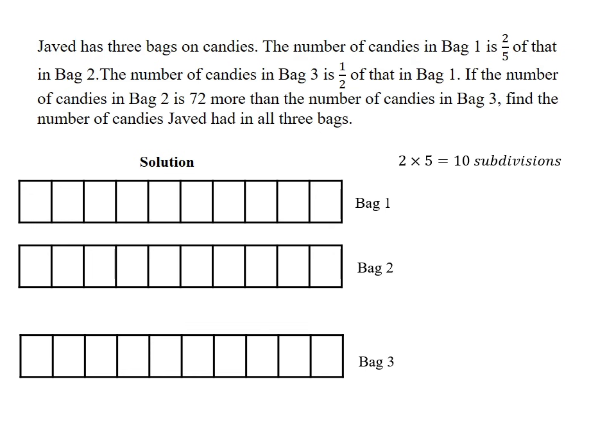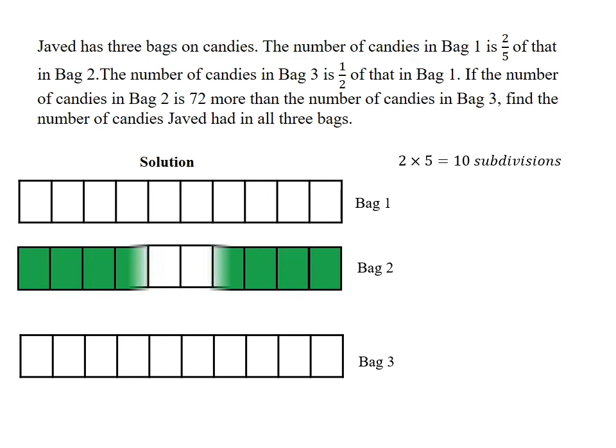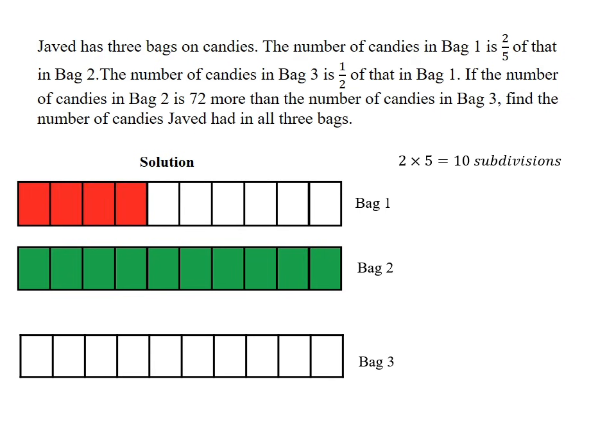Okay, if you look carefully, you would see that reference is made to bag two. So if bag two is represented by this model with ten green subdivisions, we can easily see two-fifths of this. Because two-fifths of ten would give me this, that is four-tenths. So bag one would represent two-fifths of bag two.